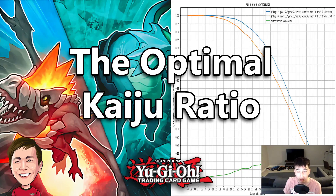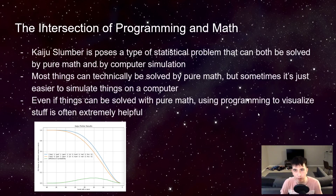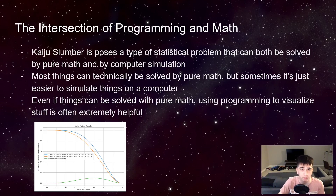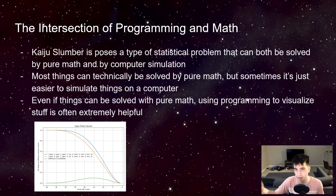This is a math and programming in Yu-Gi-Oh! video — and math and programming, as it turns out, are related. Kaiju Slumber is a really interesting statistical problem because it's one of those problems that's not so complicated that you can't just calculate the probability yourself. You can do some probability and actually calculate it, but it can also be solved by computer simulation, and sometimes that's easier.